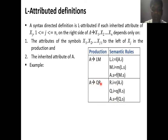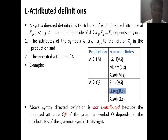If an attribute value depends on a right-hand side attribute that comes after it, that is not acceptable, and we say it is not an L attribute definition. So if A derives QR and the inherited attribute Q.i depends on the attribute R.s of the grammar symbol to its right, we call it not L attributed. But if A derives LM and the inherited attributes depend only on the left-hand side or left siblings, we call it an L attribute definition.